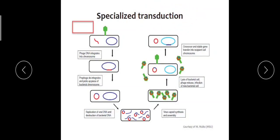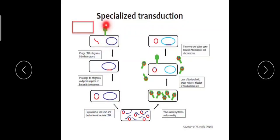As you know, transduction is the process of genetic transfer between two strains of bacteria with the aid of a bacteriophage. In specialized transduction, what happens is that a bacteriophage infects a bacterium — it attaches to the wall of a bacterium.